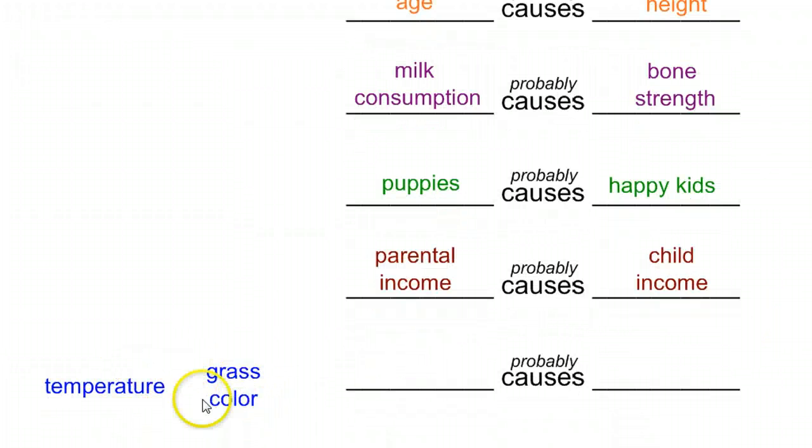And then finally, this last one, grass color and temperature. Does the temperature getting very hot or very cold change the color of your grass, or does the color of your grass change the temperature outside? More than likely, the temperature, which is a much larger phenomenon, would affect the grass color. Otherwise, my lawn might make the world seem like it's a very hot or very cold place based on its color.